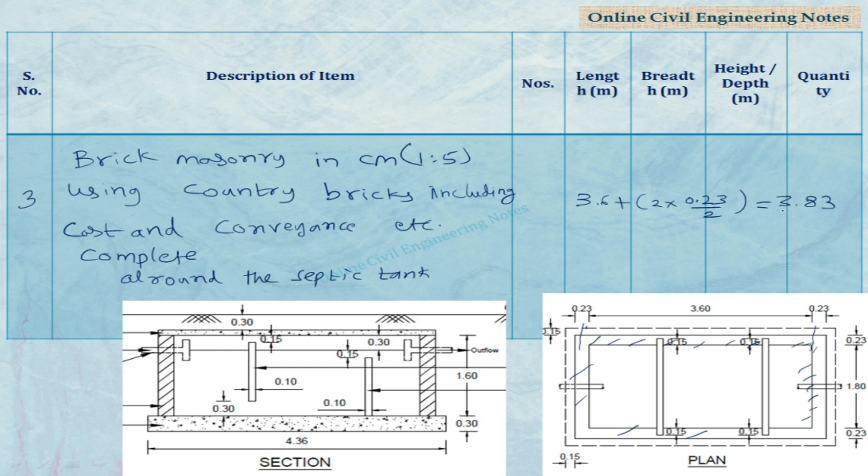Center to center length in the longer direction is 3.83 meters. Similarly in the width direction 1.8 is the inner width plus 2 into 0.23 by 2 which is equal to 2.03 meters.